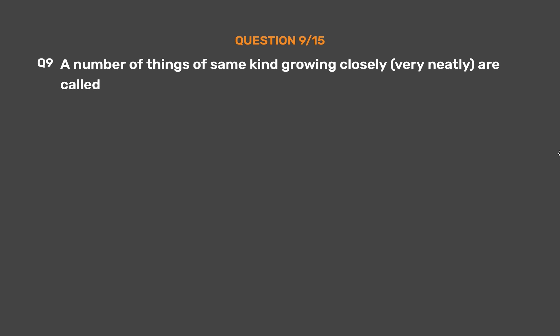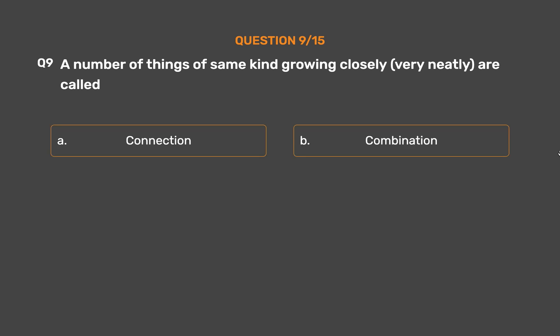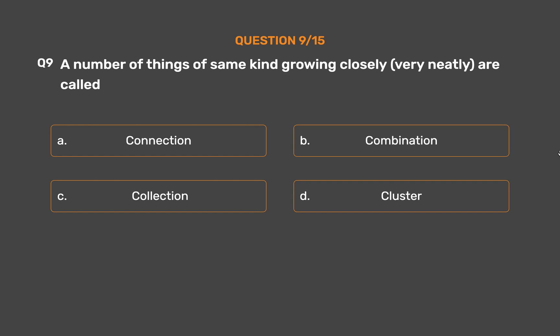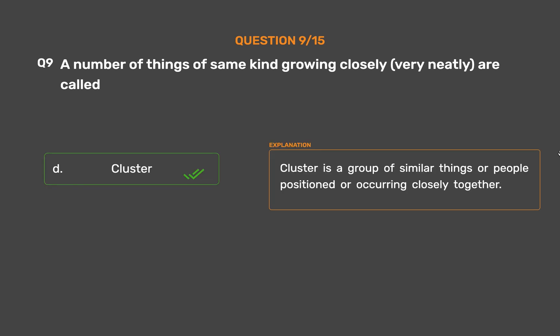Question number nine. A number of things of the same kind growing closely and very neatly together are called: Option A - Connection, Option B - Combination, Option C - Collection, Option D - Cluster. The correct answer is Option D: Cluster. A cluster is a group of similar things or people positioned or occurring closely together.